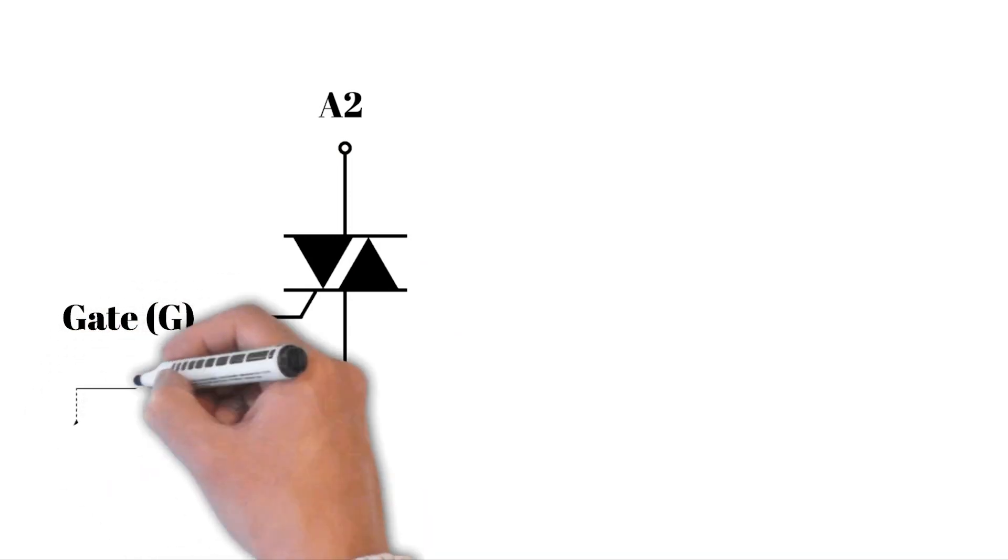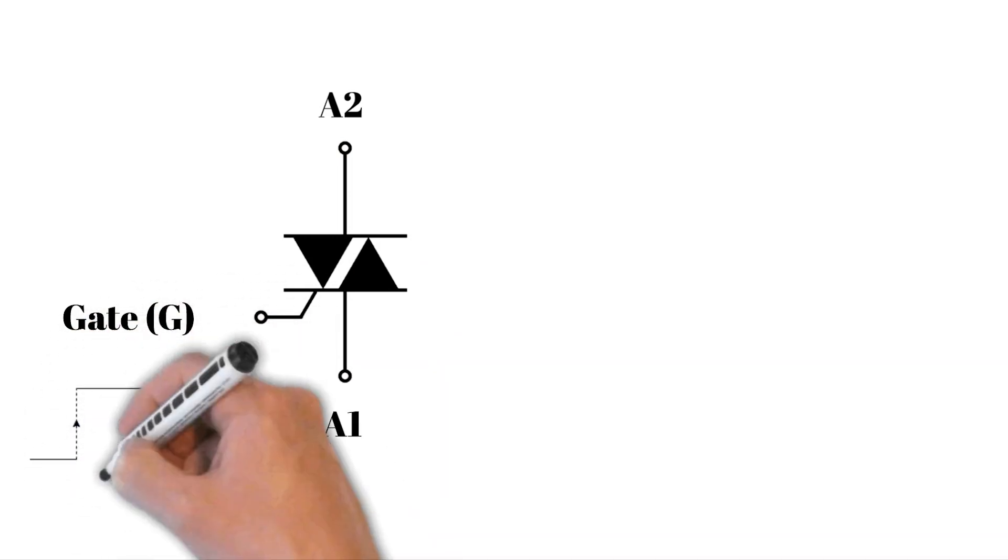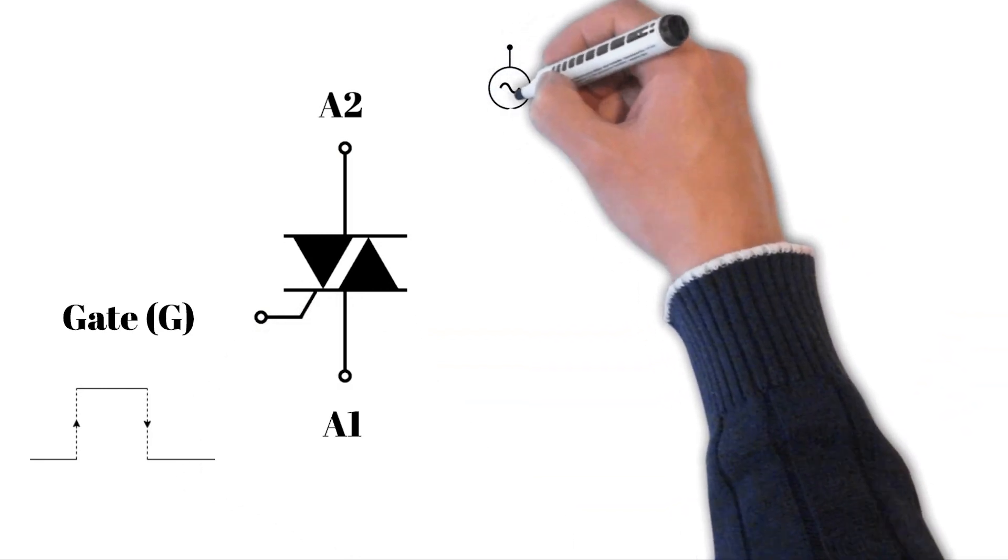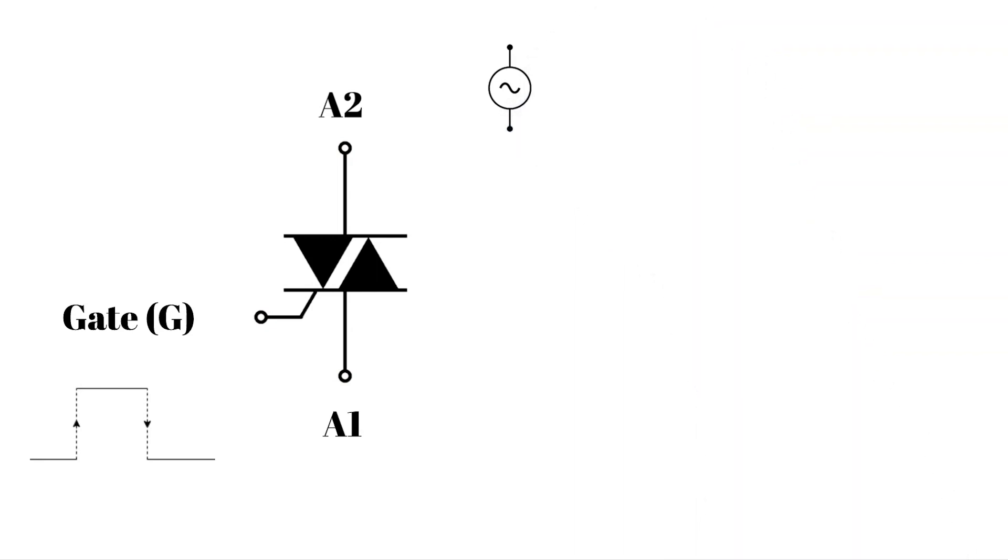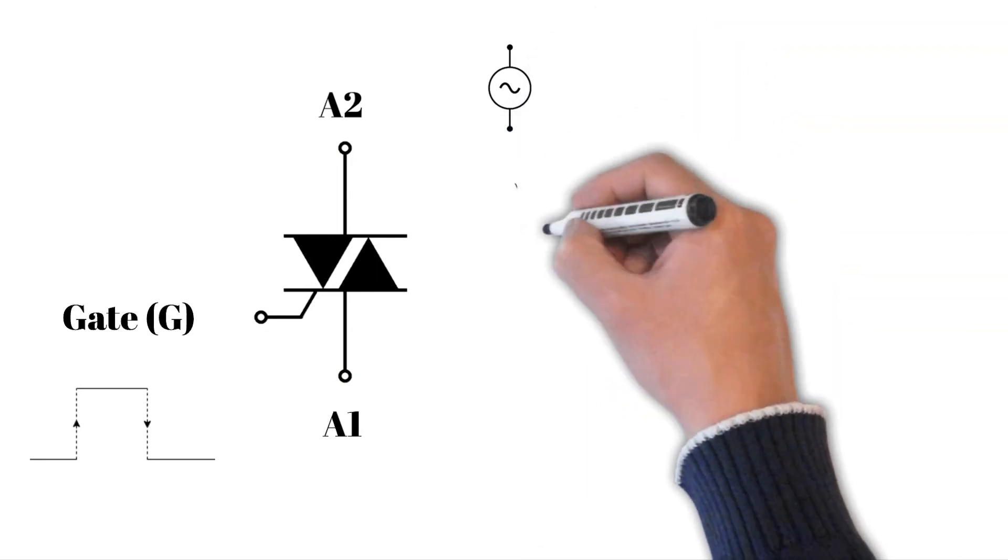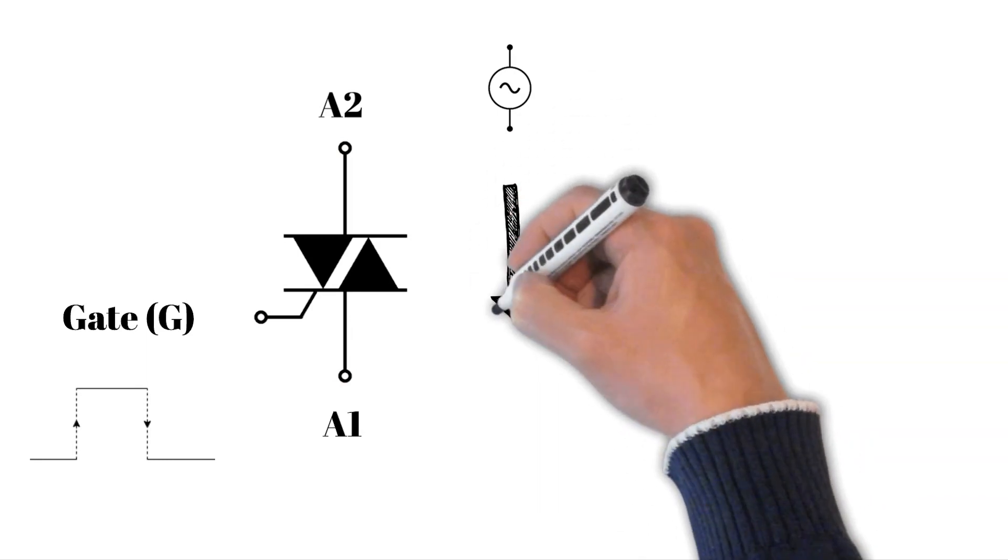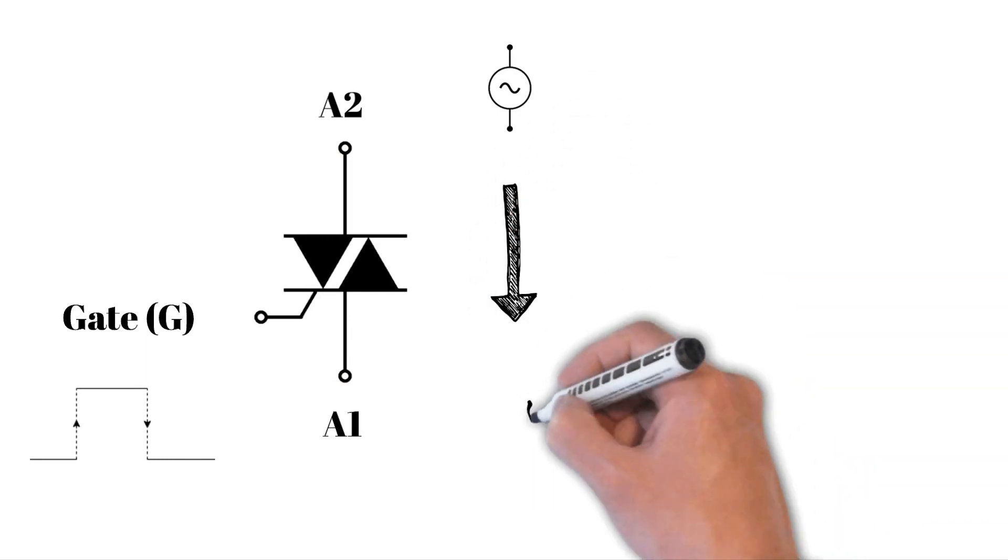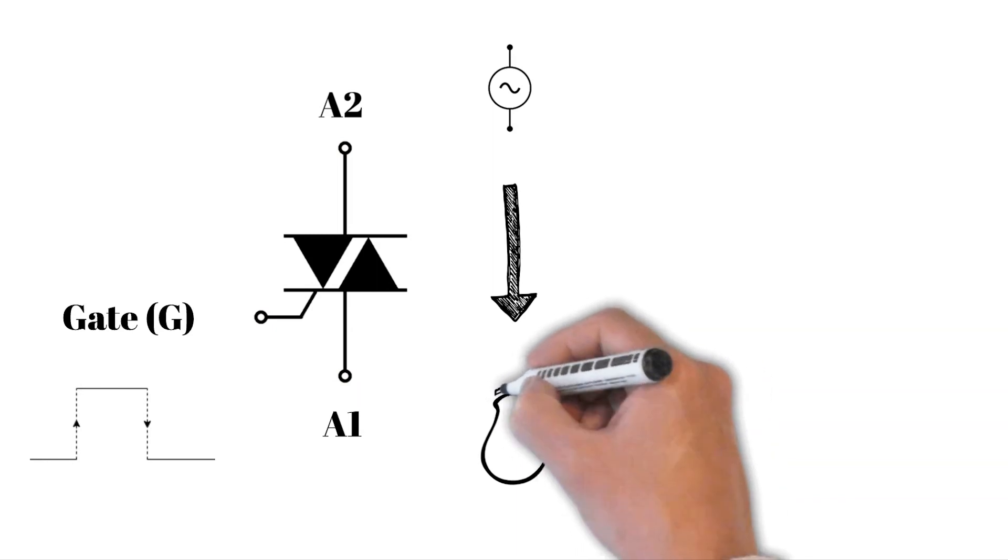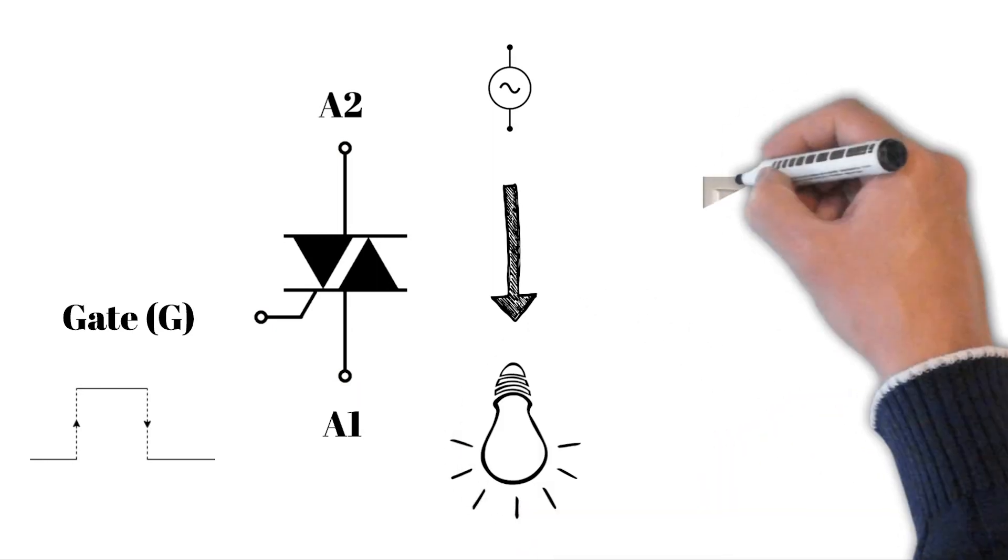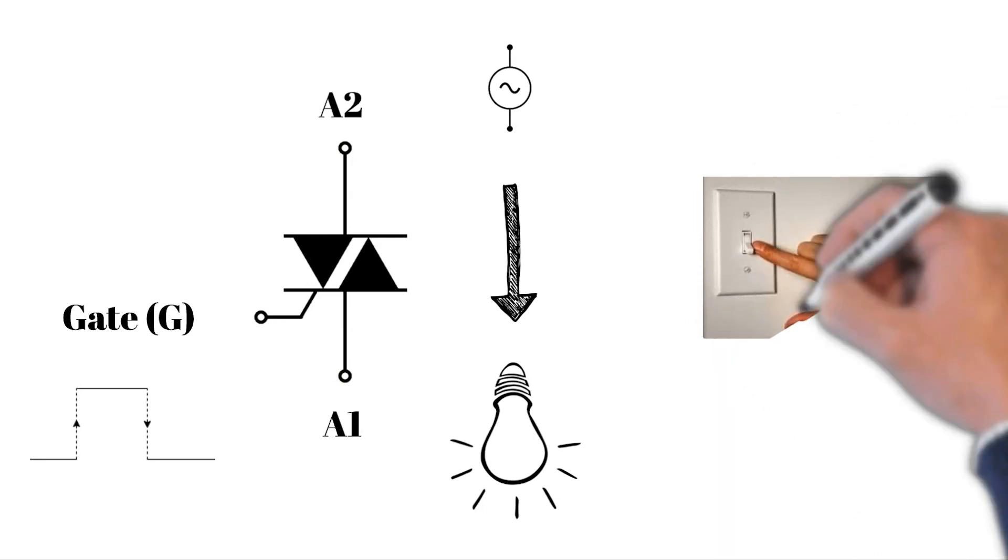You can apply pulses that we call triggers. When the triggers apply to the gate, then the AC or DC signals can pass through A2 to A1 and vice versa. It works like a key.